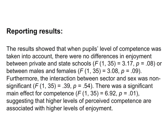When writing up our results, we want to report the F values and the P values for both of our independent variables and also the interaction. We also want to report the F values for our covariate of competence. That concludes the screencast for ANCOVA. We have shown how to test the assumptions of ANCOVA, how to run the analysis, and how to interpret and report the results. Thank you.